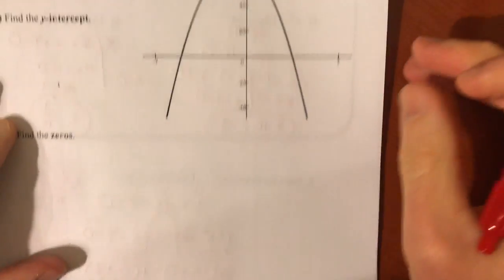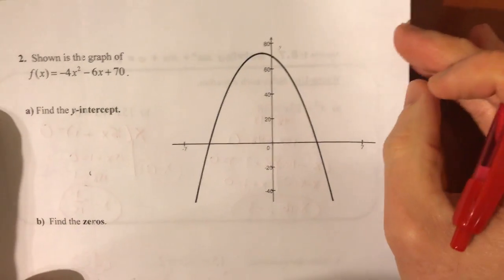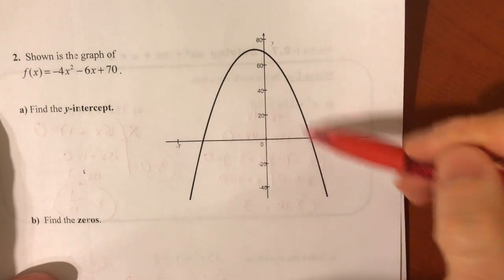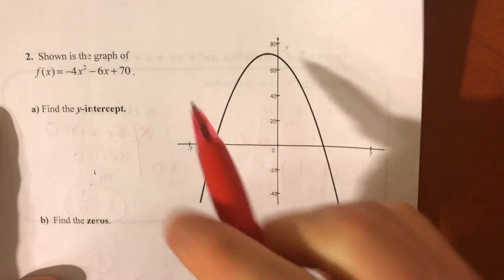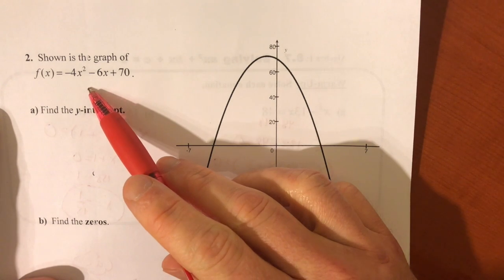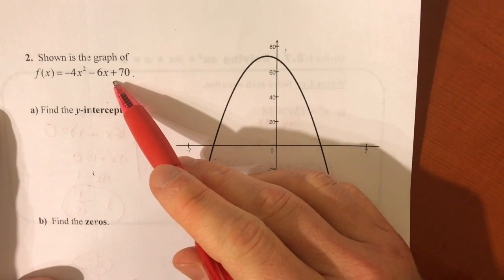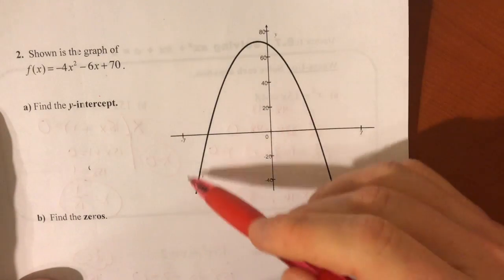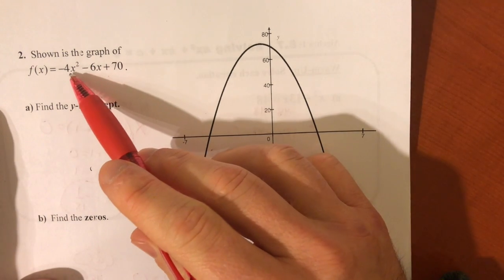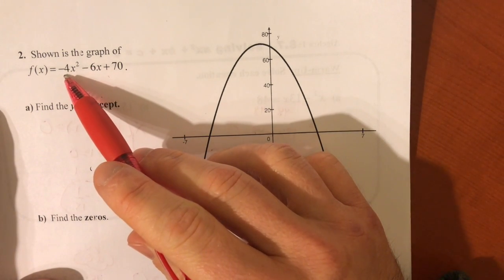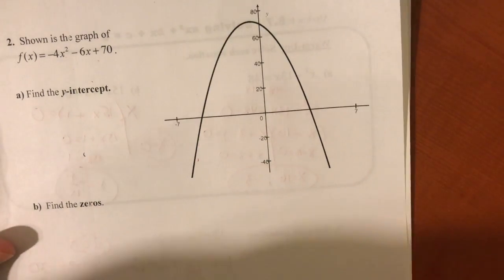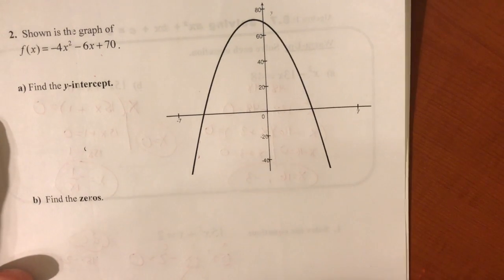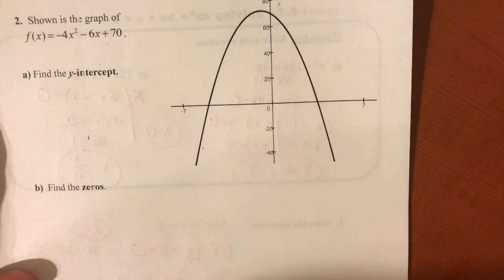Okay, so part two of this, we're just going to revisit and put some different ideas together with our graphing knowledge. This is the graph of negative 4x squared minus 6x plus 70. Hopefully you recognize that is a parabola and it's opening downward because the a value is negative.